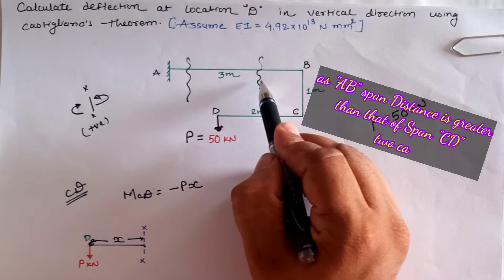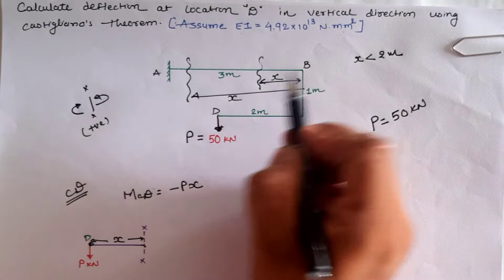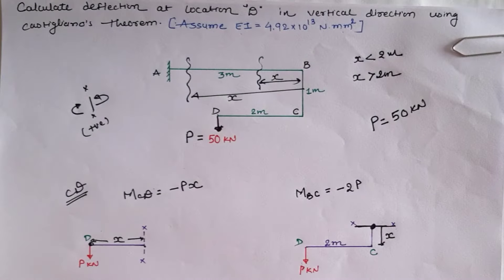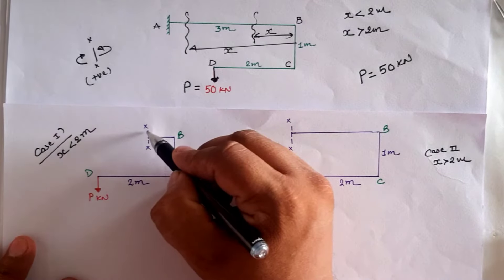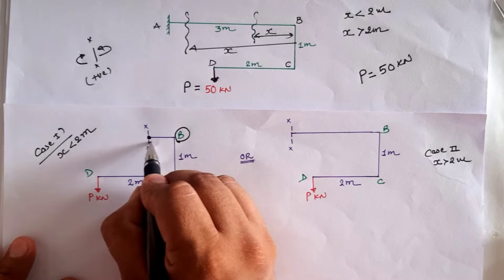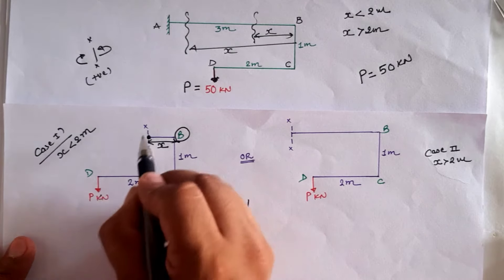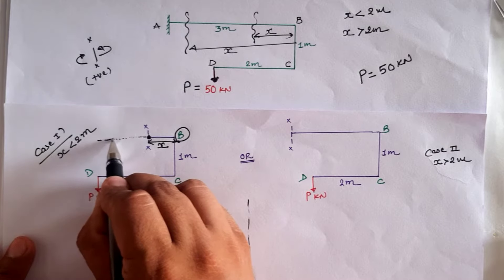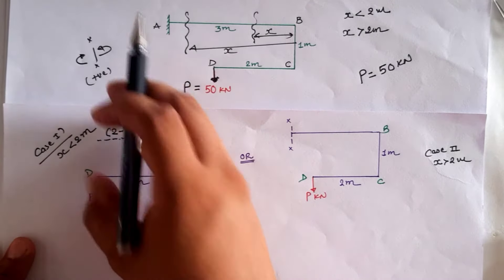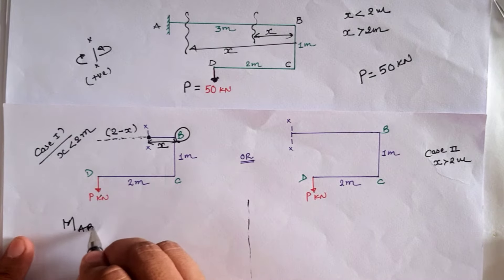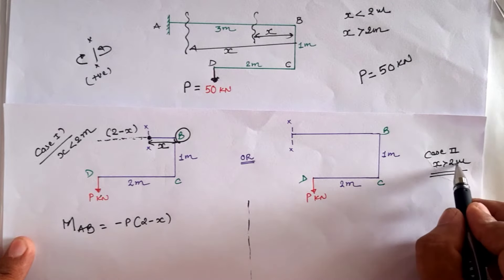For the AB segment there are two possibilities: first, a section having distance less than 2 meters, and second, a section having distance greater than 2 meters. For the first case where x is less than 2 meters, taking origin at B with distance x from B, the moment at location x is P into (2 minus x). The sectional left-hand side anticlockwise moment is negative, so the moment in segment AB equals minus P into (2 minus x).